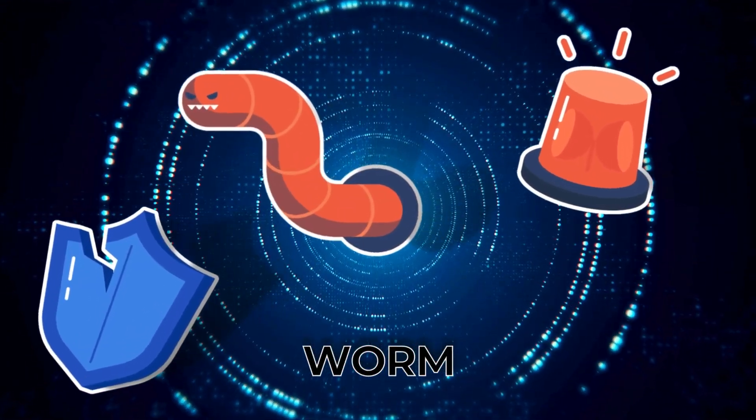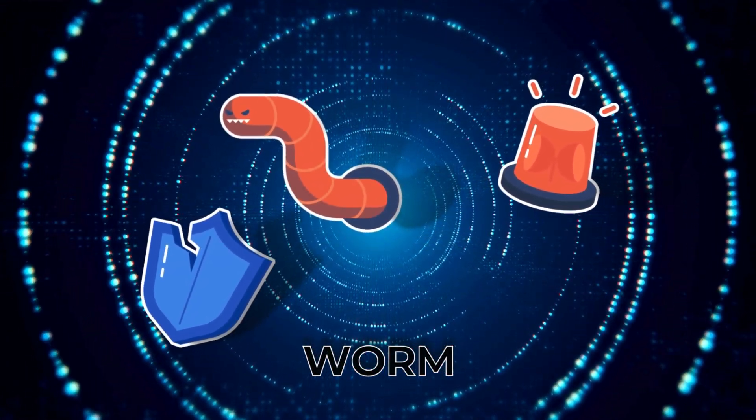Thirdly, the worm. A worm is a sneaky little program that replicates itself and slithers through your computer network, creating copies of itself without any human action needed. Imagine it as magic self-copying paperwork that not only fills up your office but can also send copies to other offices without you even having to send them.